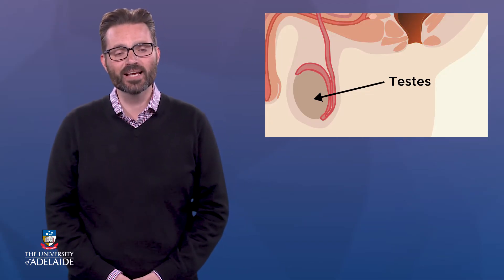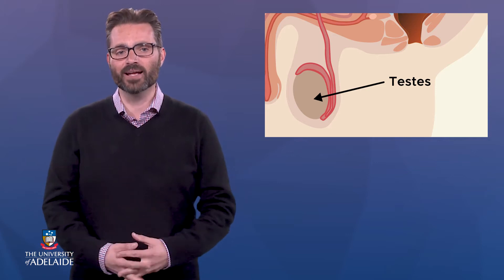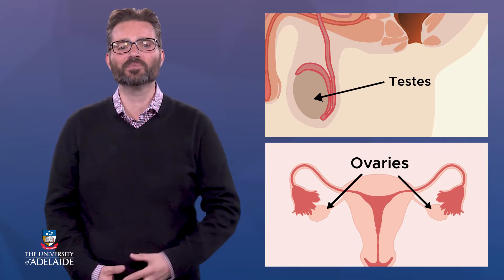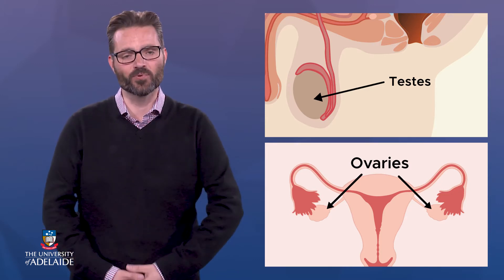Previously, you've learned that gametes are made in the gonads — specifically sperm cells are produced in the testes, whilst eggs are made in the ovaries. But have you ever wondered just how sperm and eggs are made in these organs? In this video, I'll introduce you to 6 sexy facts about sperm and egg production, and after this video you'll be able to compare the process and timing of gamete production in males and females.